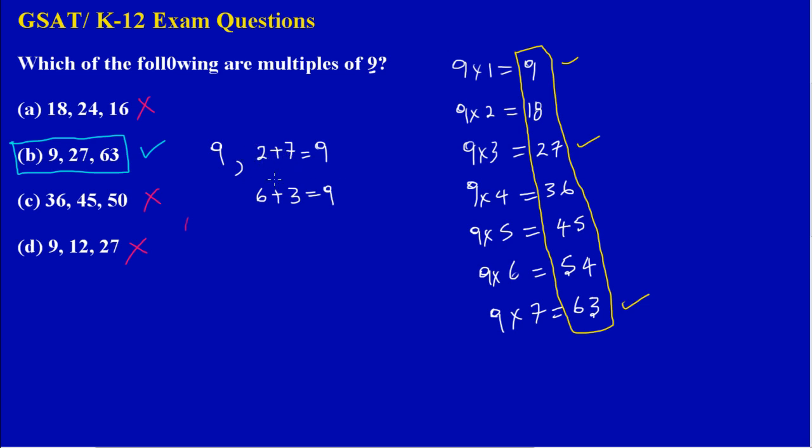So that's a quick way of finding out if numbers are multiples of nine. When you add the digits, when you add all of the digits, you must get nine. All right, bye.